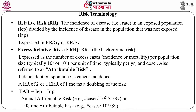Before going further, let's familiarize ourselves with risk terminology. Relative risk is the incidence of disease in an exposed population divided by the incidence of disease in a population that was not exposed — that is, incidence in exposed population (IEP) divided by incidence in non-exposed population (INP). Relative risk is expressed per gray — gray being a unit of radiation dose — or per sievert, which is the unit for effective dose.